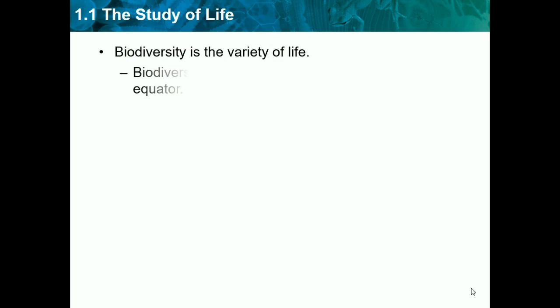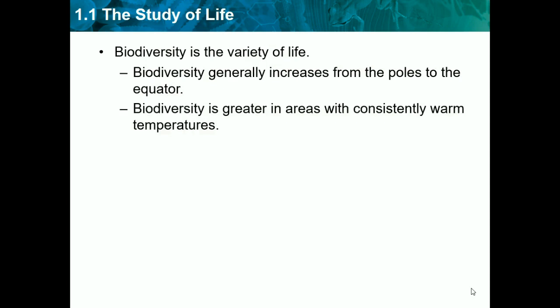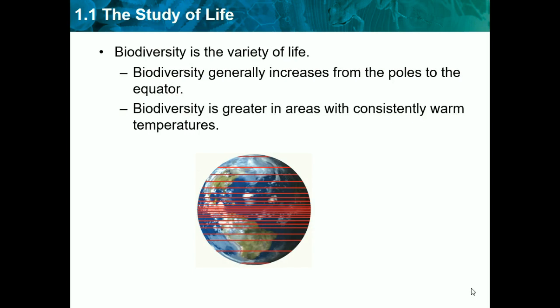Biodiversity is the variety of life. Biodiversity generally increases from the poles to the equator, and biodiversity is greater in areas with constantly warm temperatures. The equator of our Earth has much more biodiversity, hence the many red lines clustered there. It's dense there because there are warmer temperatures where most animals and plants thrive, but the poles are too cold and it kills most of the animals and plants living there.